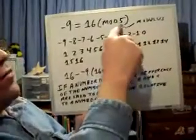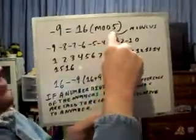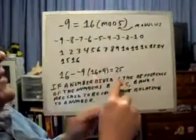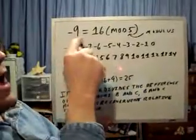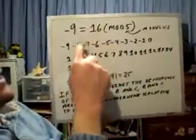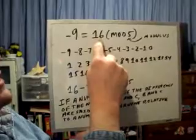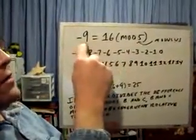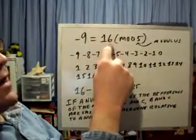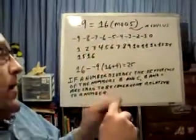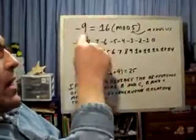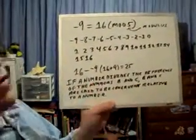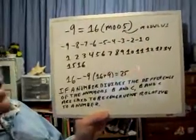If a number, which is right here, the 5, see that 5 right there. If that 5 divides the difference of the numbers B and C, we're going to take negative 9 and 16. See that negative 9 right there? I'm going to take this 16. If 5 divides the difference of negative 9 and 16, then B and C, which is negative 9 and 16, are said to be congruent relative to a number which would be 5.